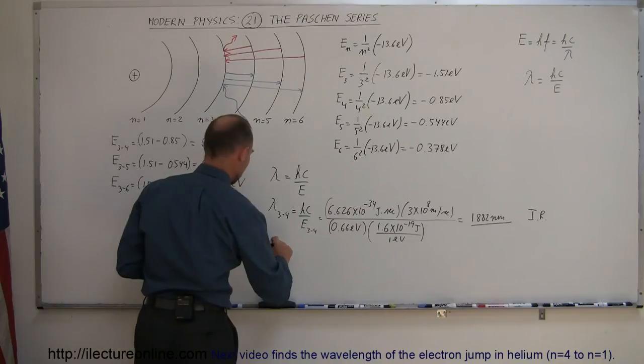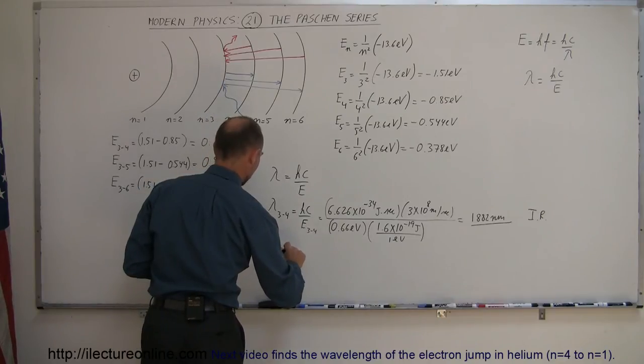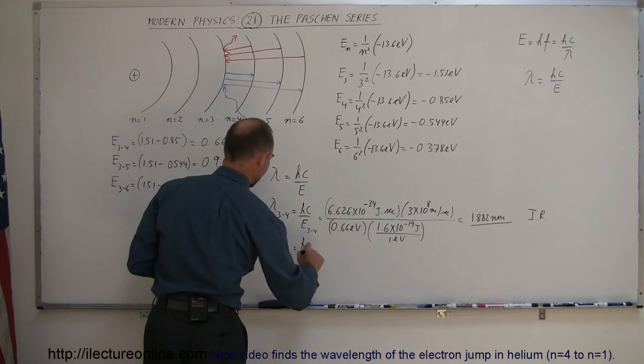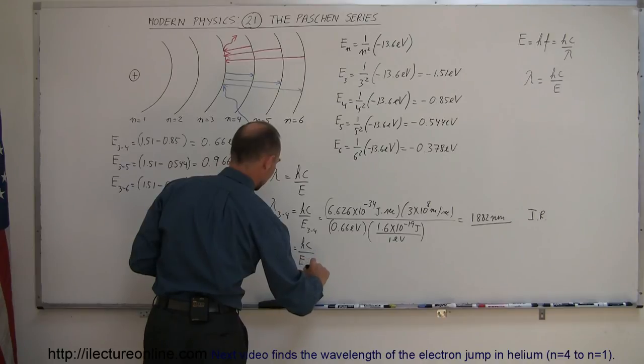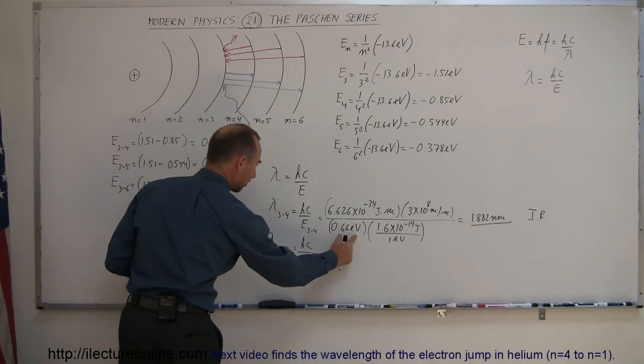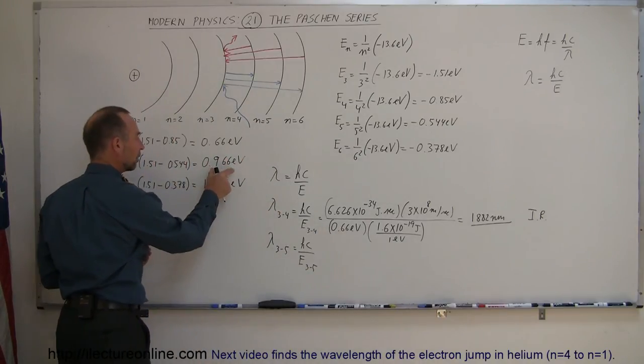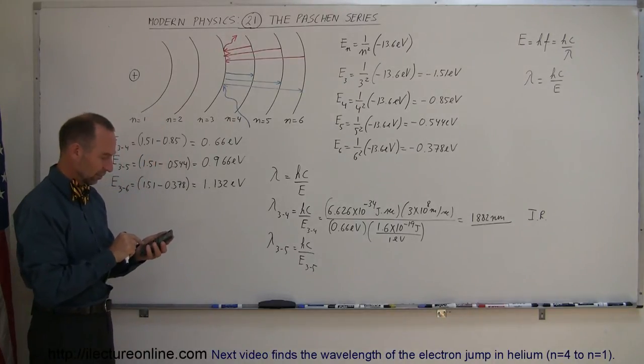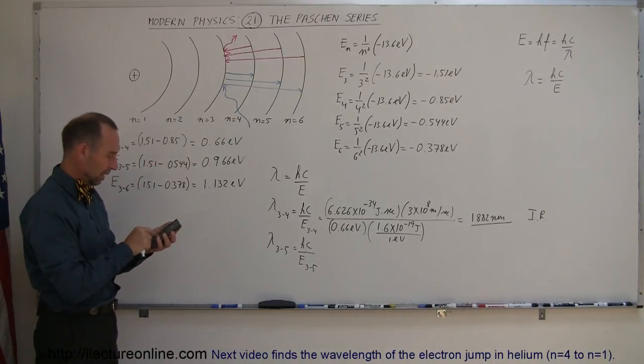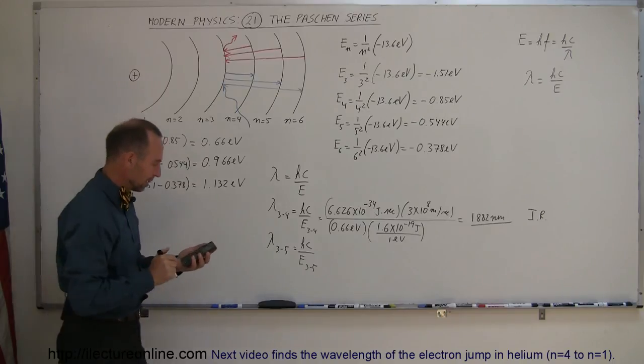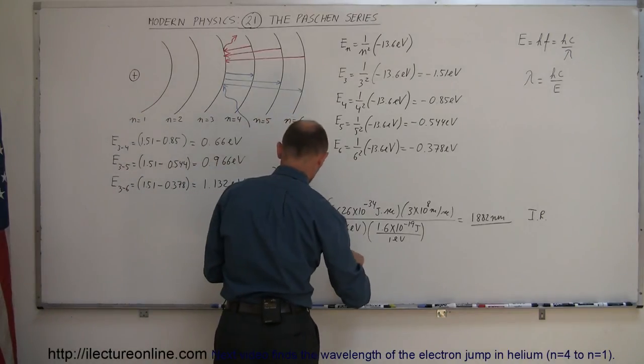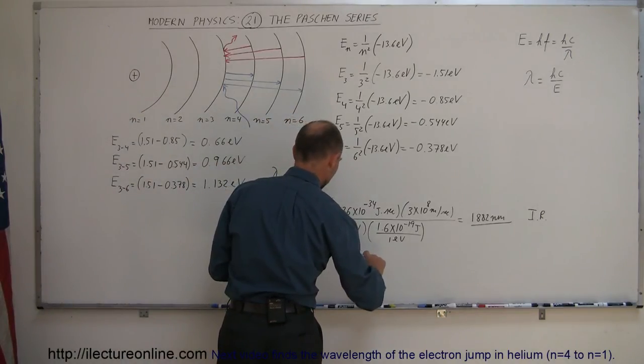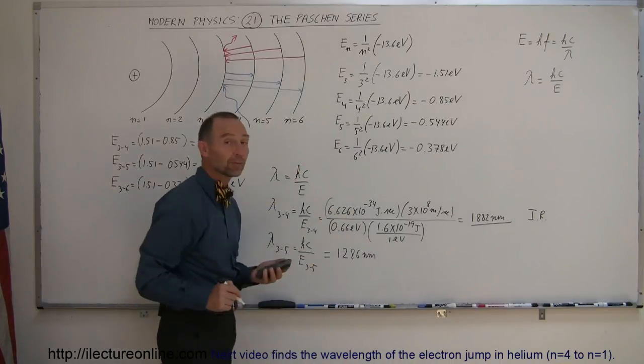If we take the lambda for between 3 and 5, that would be hc divided by the energy difference between 3 and 5. So instead of the 0.66 electron volts, we're going to take 0.966 electron volts. That gives us a wavelength of 1286 nanometers, still well above the visible light range.